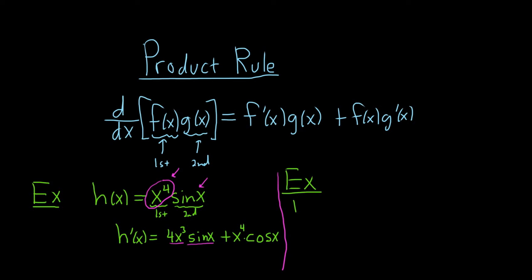Let's do one more problem. How about h(x) equals x squared times tangent x. Again, x² is the first piece and tangent x is the second piece.